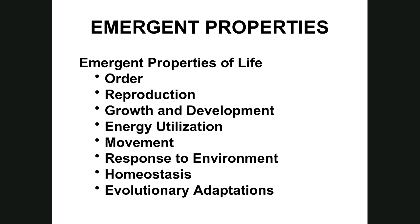Growth and development: before you were born you consisted of an egg and a sperm. When the sperm fertilized the egg you were a zygote — a single cell — that divided and became a fetus, then a newborn, then a toddler, youth, teenager, young adult, parent, grandparent, and eventually we die. Every form of life has a beginning, development, and an end.